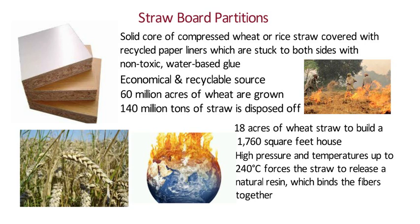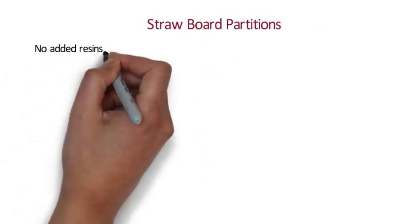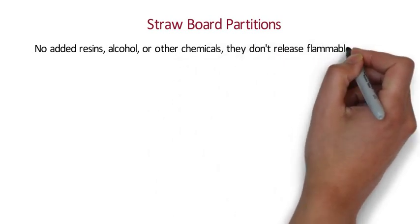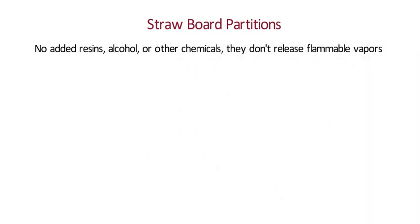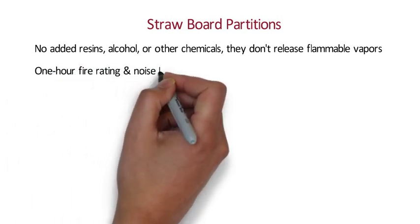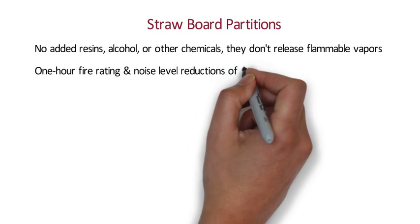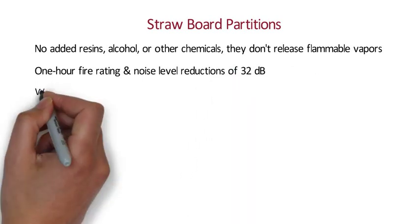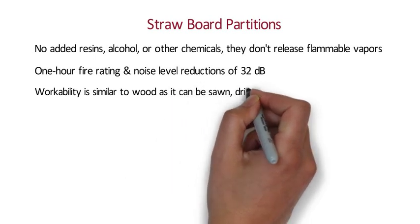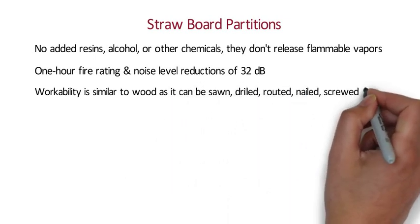In the manufacturing process, high pressure and temperatures up to 240°C force the straw to release a natural resin which binds the fibers together. The high density and low oxygen content of the resulting panels makes them resistant to combustion, and since they contain no added resins, alcohol or other chemicals, they don't release flammable vapors. Standard strawboard panel has a 1-hour fire rating and noise level reduction of 32 decibels from one side to the other. The product's workability is similar to wood — it can be sawn, drilled, routed, nailed, screwed and glued.